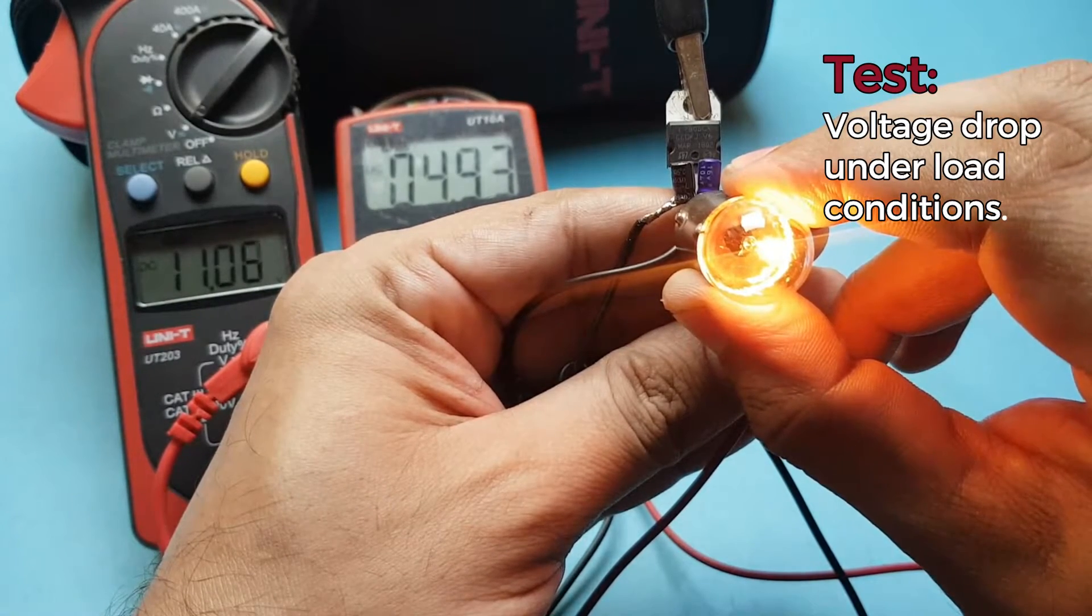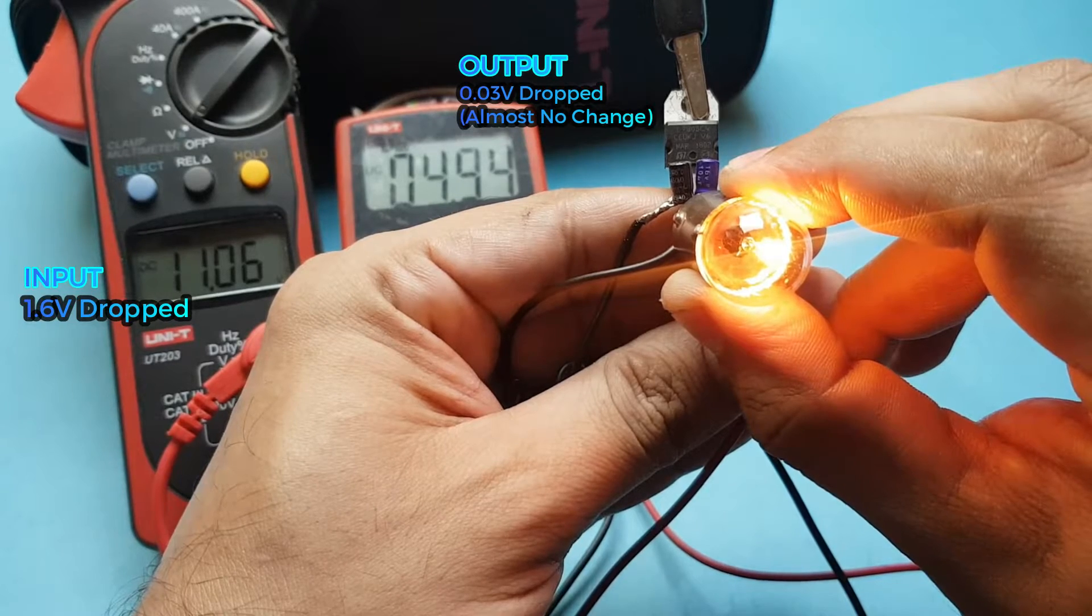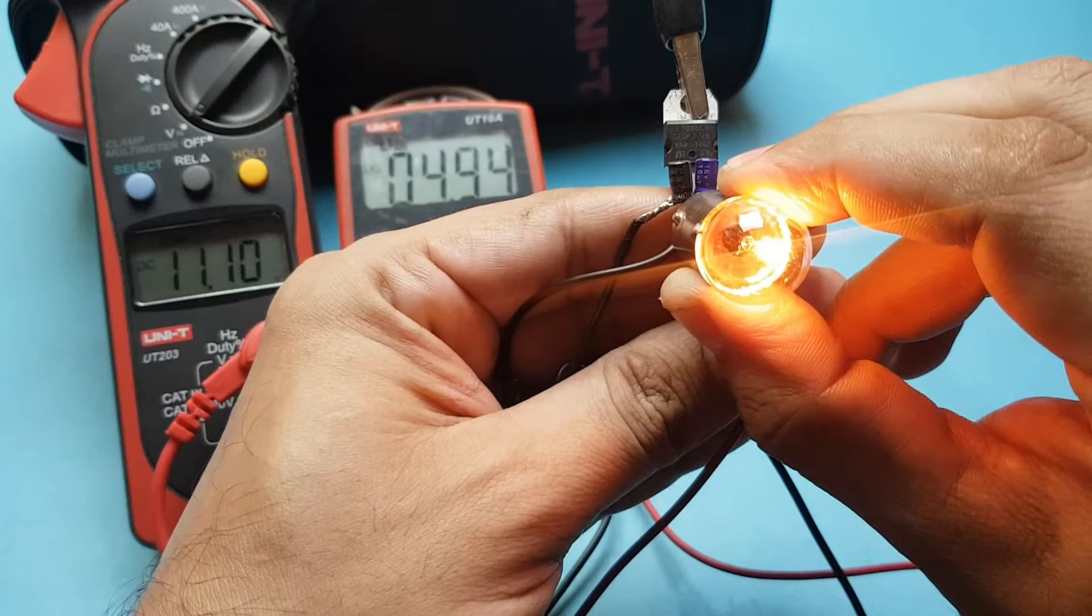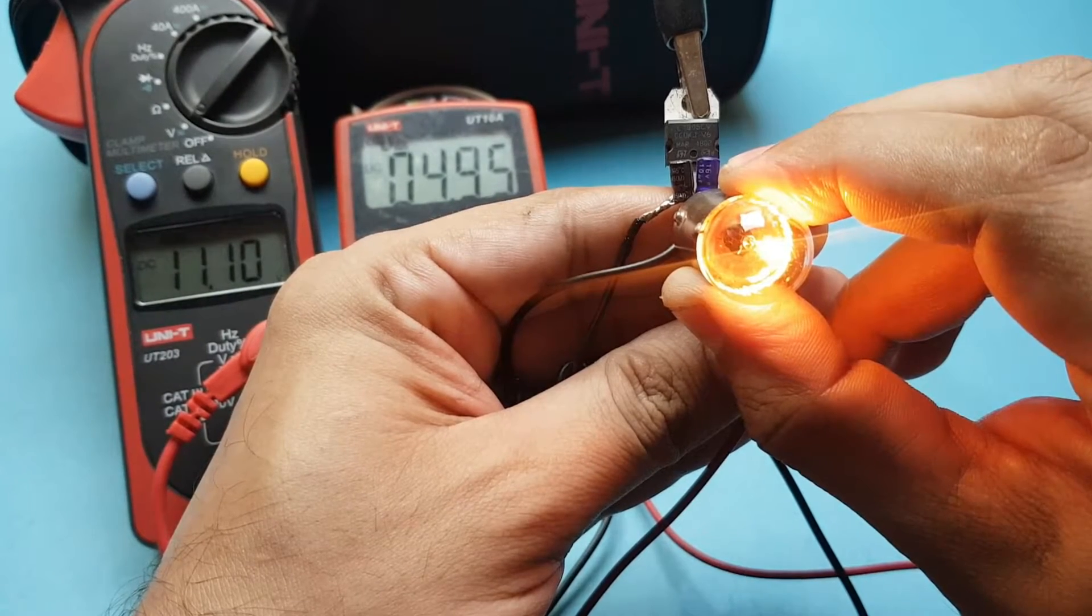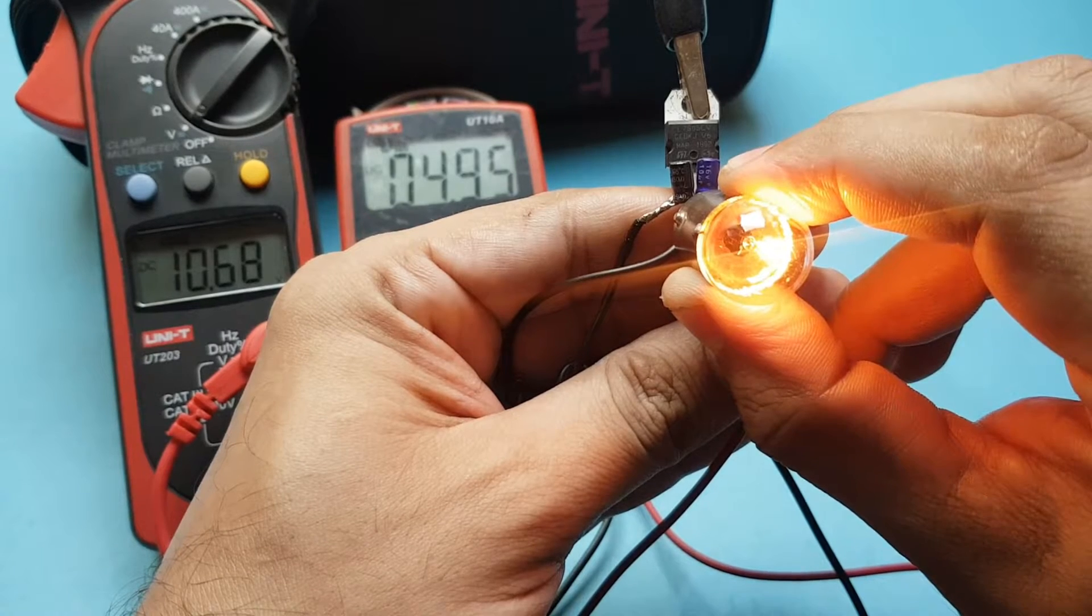As shown on the left multimeter, after putting the load, the input volts from my power adapter dropped by 1.6 volts, yet the output on my LM7805 is still the same. So LM7805 is definitely doing its job.